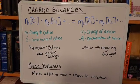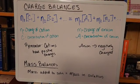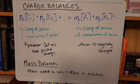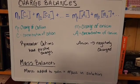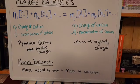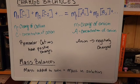Now, charge balances are basically just a statement of electroneutrality. So if you take the species that you're adding into solution and you break them into their ions, the number of cations is going to equal the number of anions.